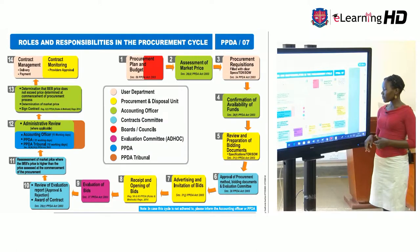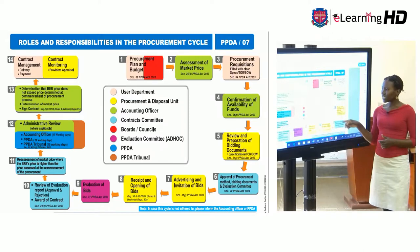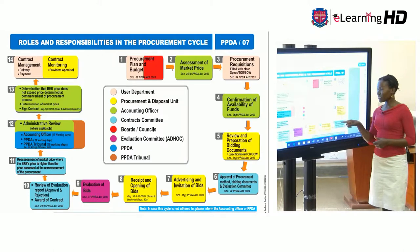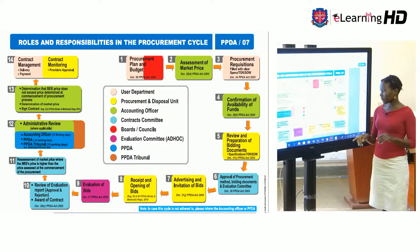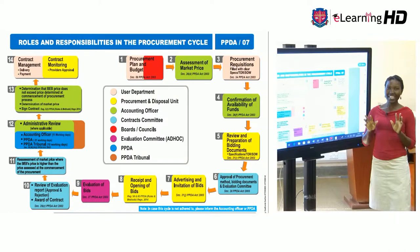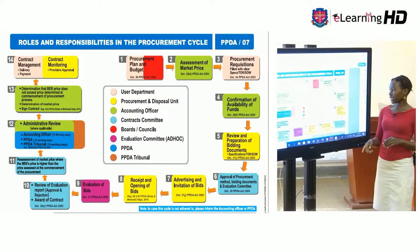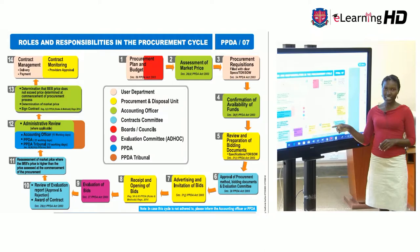Six, they look at approval of procurement method, the bidding documents, and the evaluation committee — this is the work of the contracts committee. They have to approve the procurement method: are you going to use competitive bidding, identify a sole provider, or use all? Seven, you need to advertise and invite for bids. You need to create as much window for competition as possible to create value for money, so advertise and create awareness about the procurement opportunity.